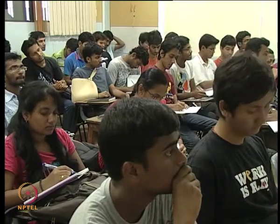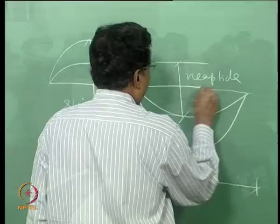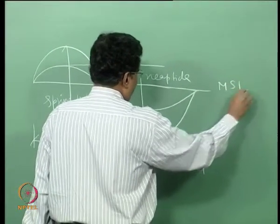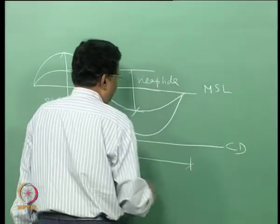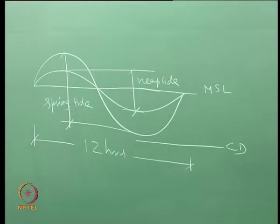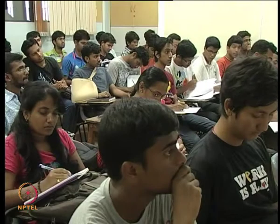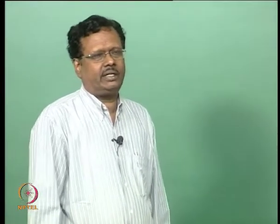The initial level is called the MSL. We put a chart datum which is below the lowest water level. CD is the chart datum, kept below the lowest water level. We will be talking about the mean of the spring tides. The spring tides are during new moon and full moon — that means every 15 days. Every month and every year it will also change, so you take the mean of all the spring tides.